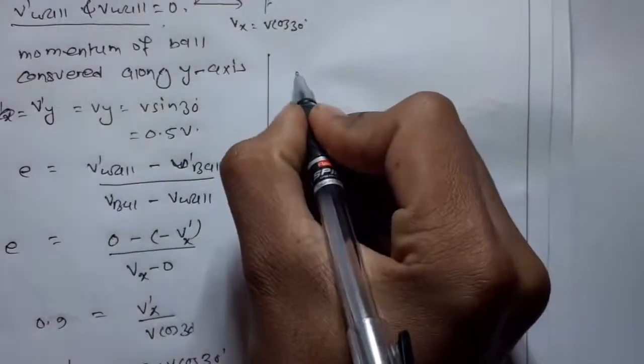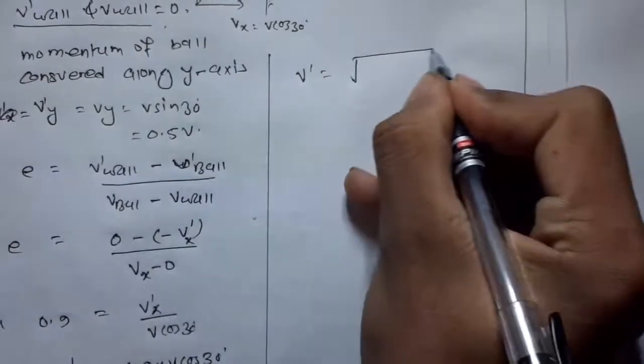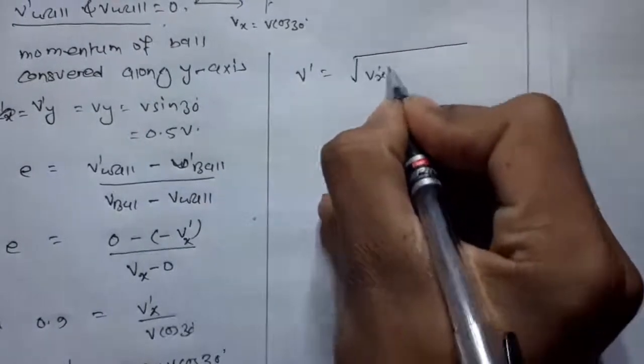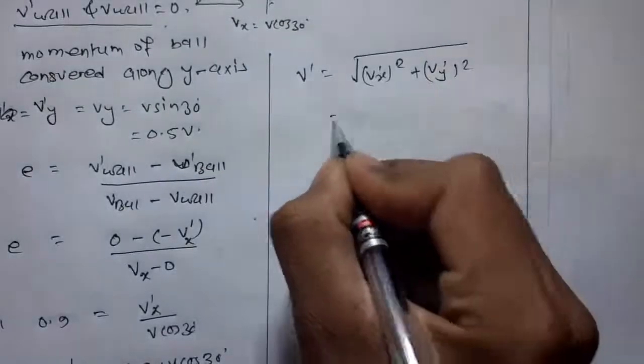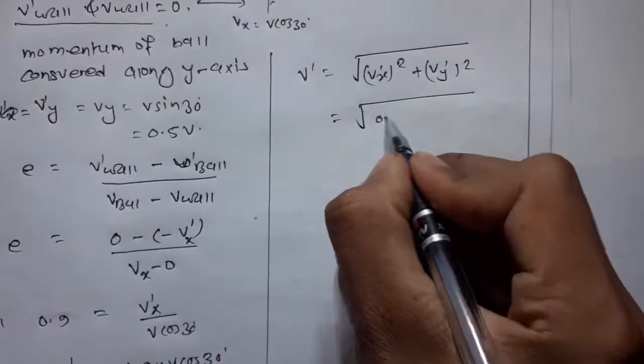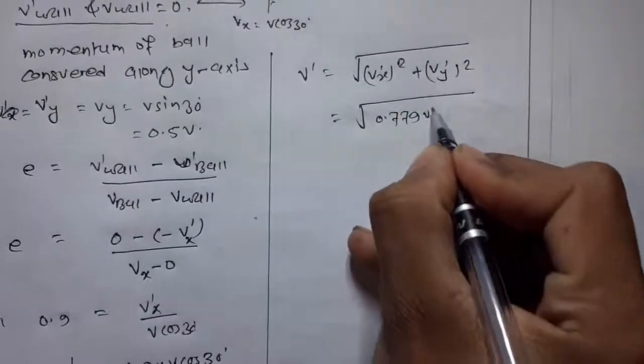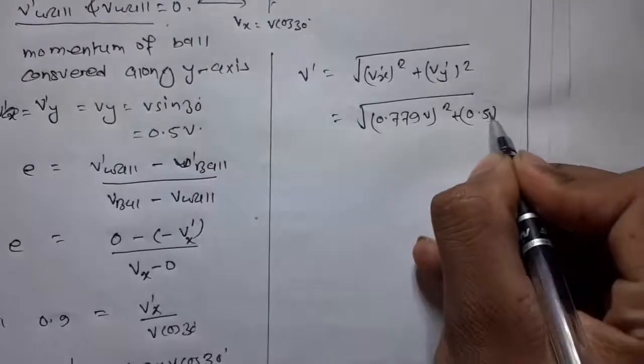Now the velocity v dash is the square root of v x dash whole square plus v y dash whole square. So this is square root of 0.779 v whole square plus 0.5 v whole square.